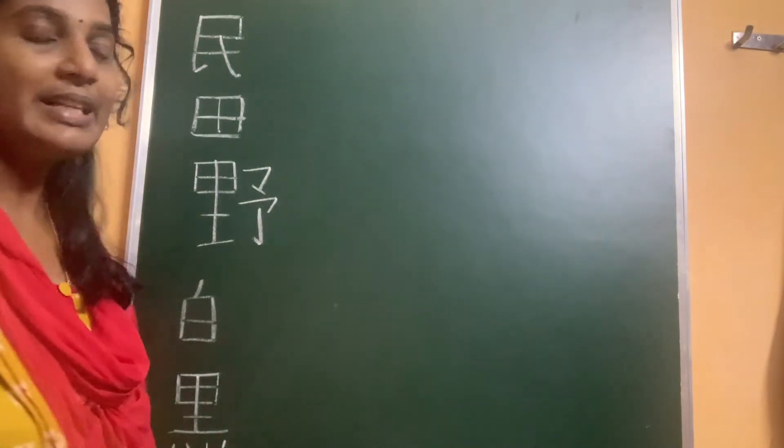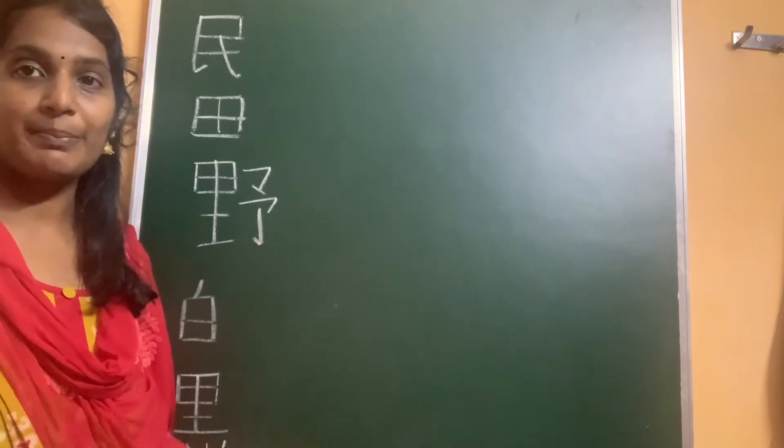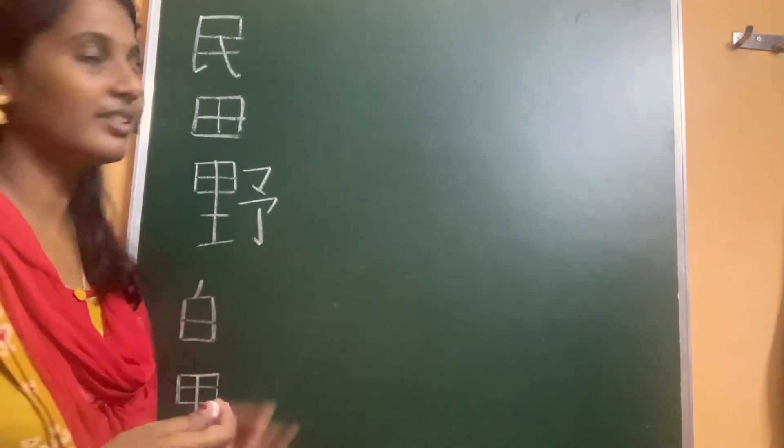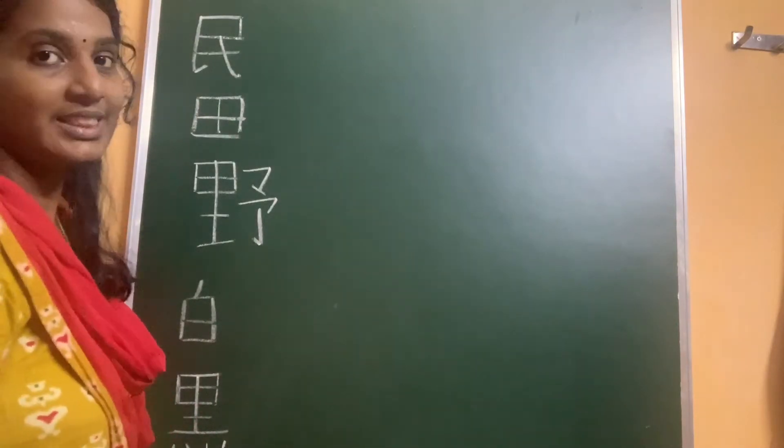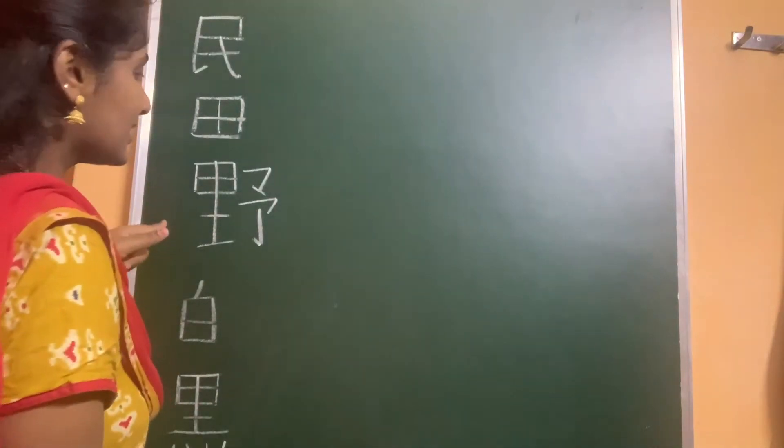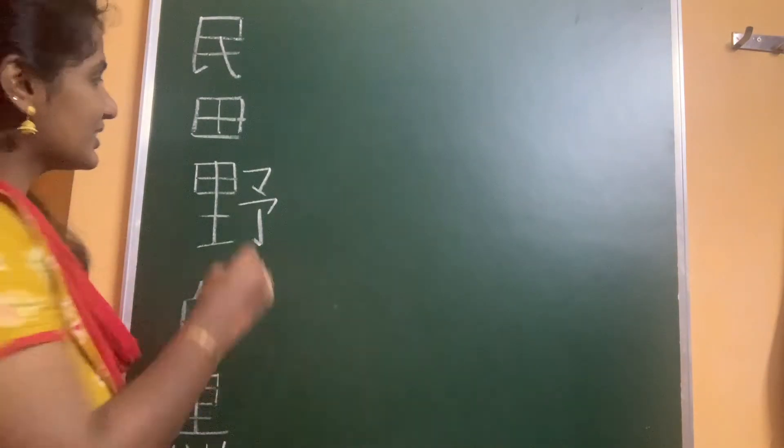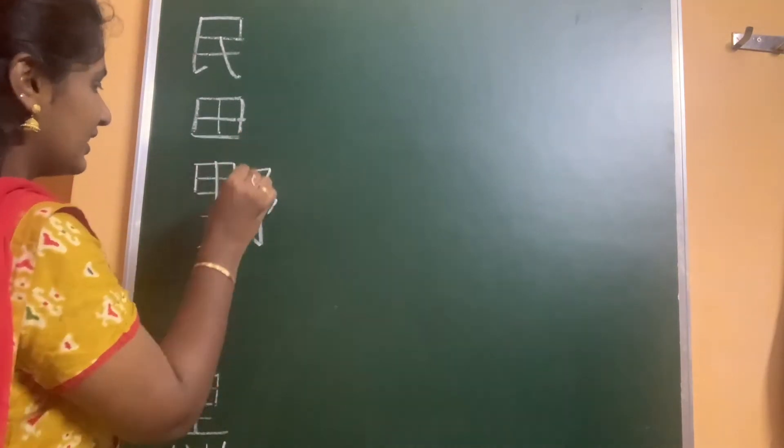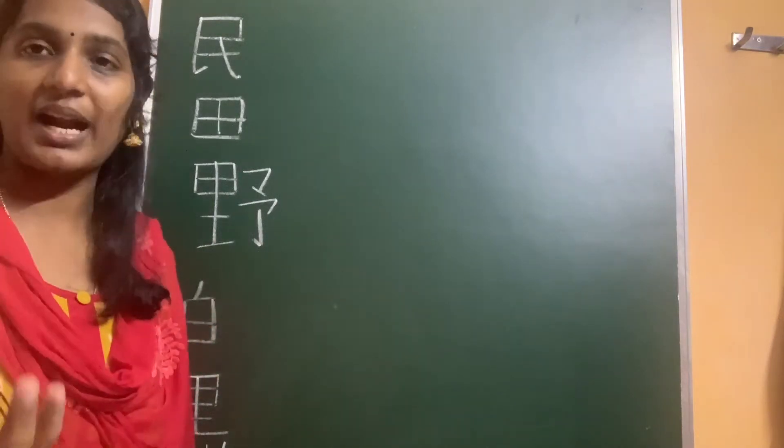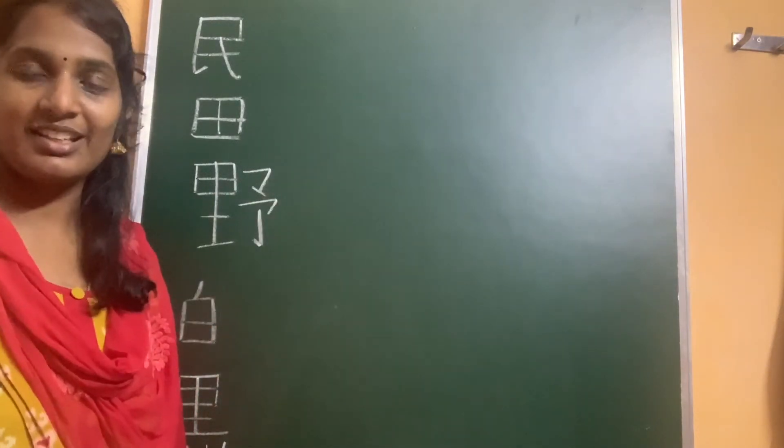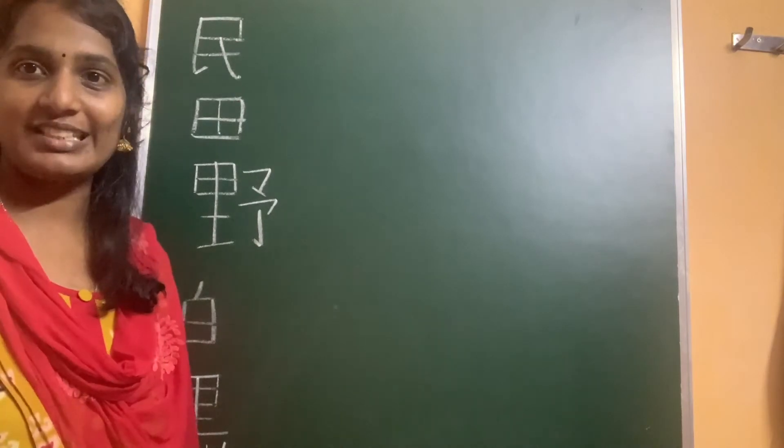For example, kokumin, which is people related to the nation. This kanji means rice field, which is ta, and this kanji is field. This is actually the rice field and this is the field. Field means it can be like department or various fields such as technology, agriculture.